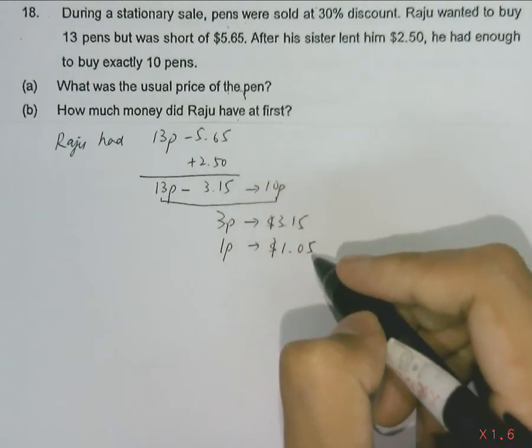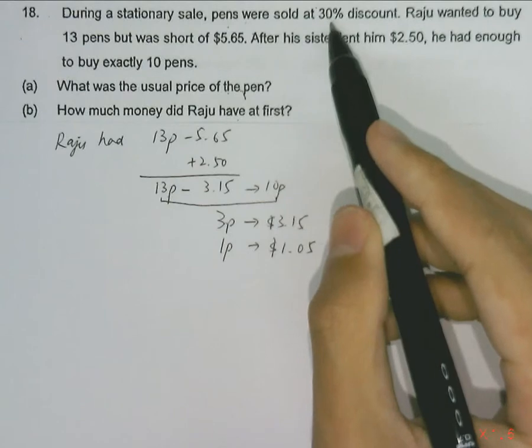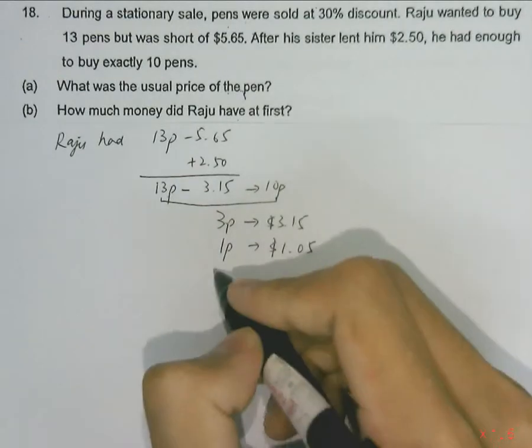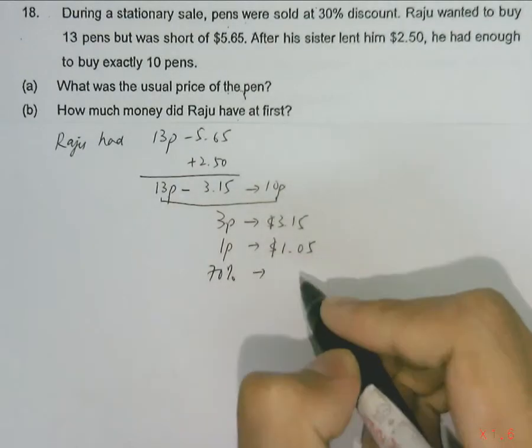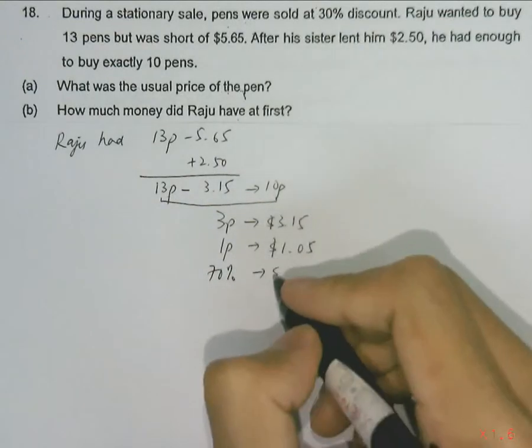Which is after the 30% discount. So we know that this will be 70%—70% of the pen's price is $1.05.